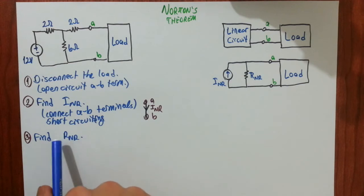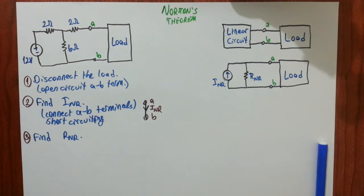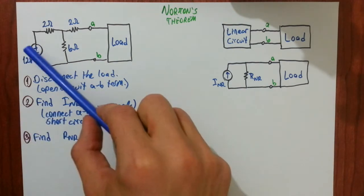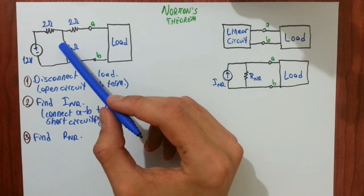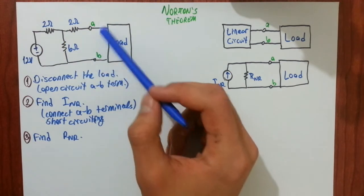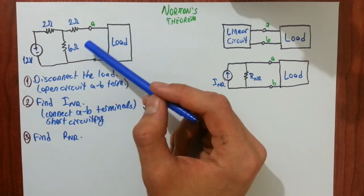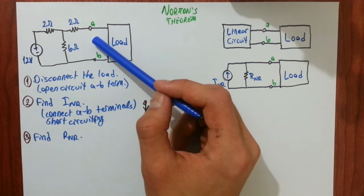The way you find this Norton equivalence resistance is exactly the same the way you find Thevenin equivalence resistance. So you will kill all independent sources. And then you will find equivalence resistance between A and B terminals. If there are dependent sources,